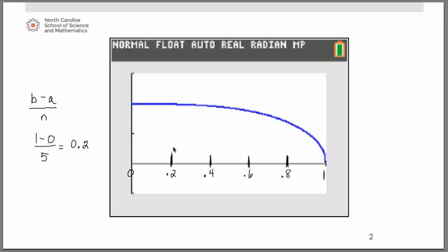So the height of each of our trapezoids, if you were to turn your head to the left, is going to be 0.2. So let's go ahead and start setting up our formula.